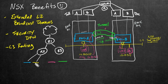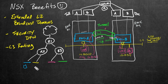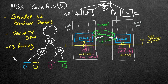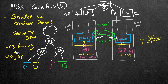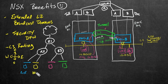Router two connects to two of those network segments and router three connects there as well. Let's put some VMs on those segments — one in blue, one in yellow representing a web server, one in pink as an app server, and one in green as a database server. For routing, we can do east-west routing within our infrastructure and north-south routing for traffic heading out to the internet.